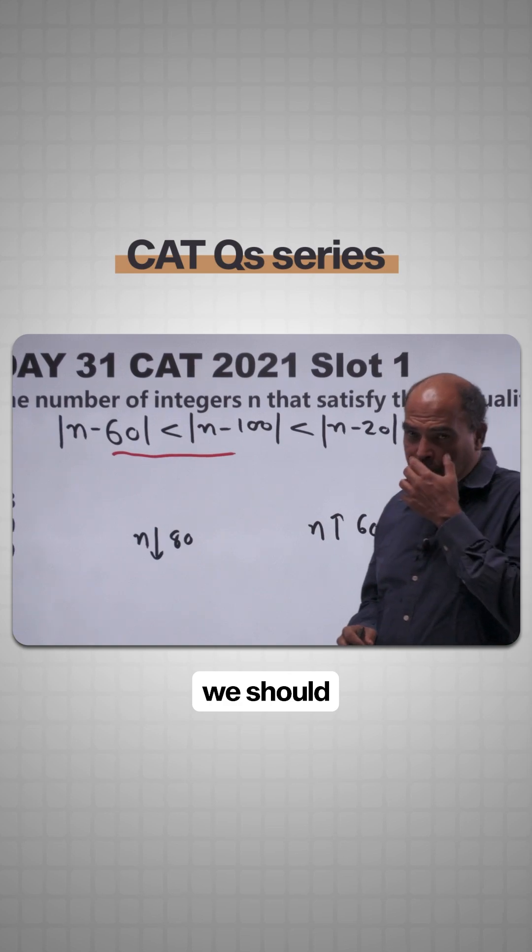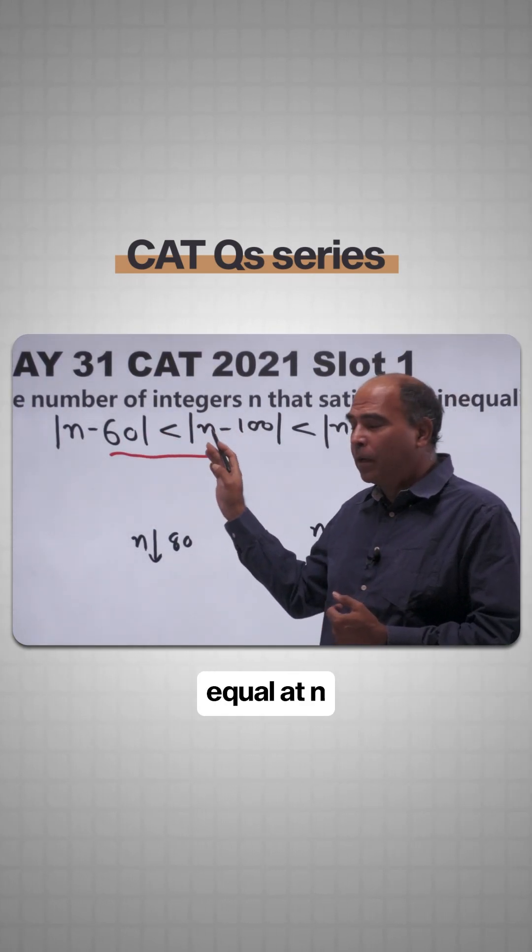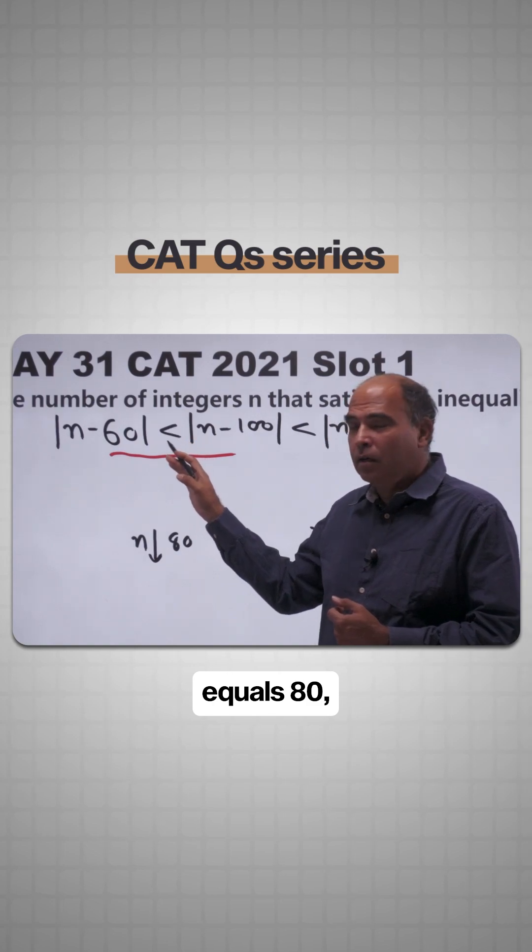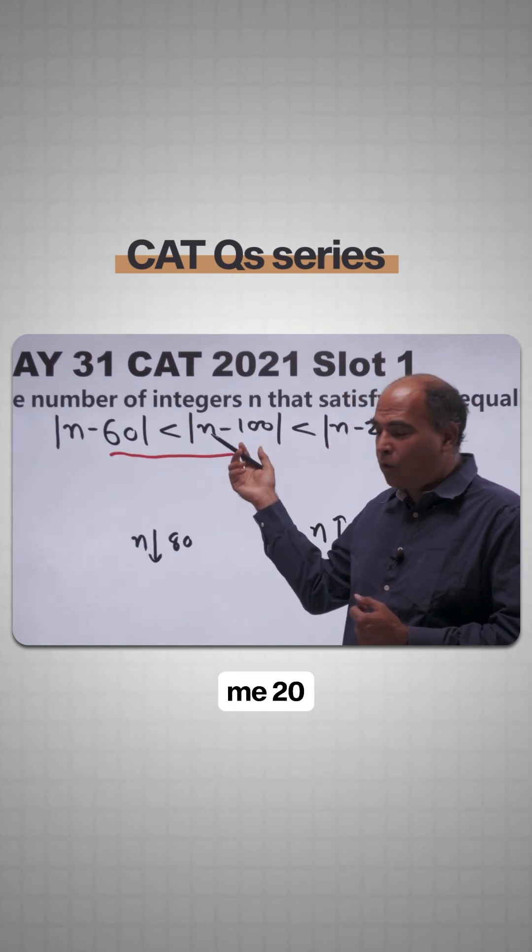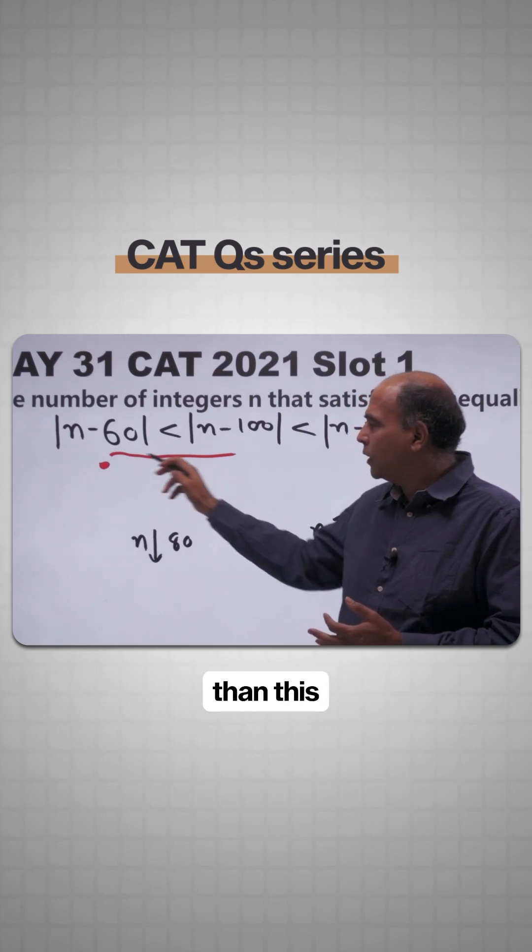If we think about the first part, what we should realize is that the two expressions become equal at n equals 80, because this will give me 20 and this will give me 20. Below 80, this will always be smaller than this.